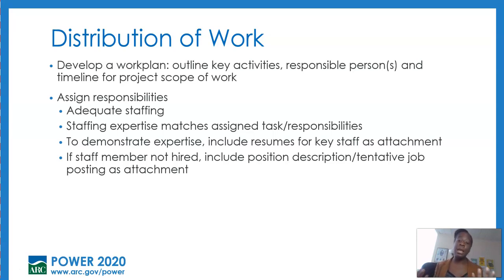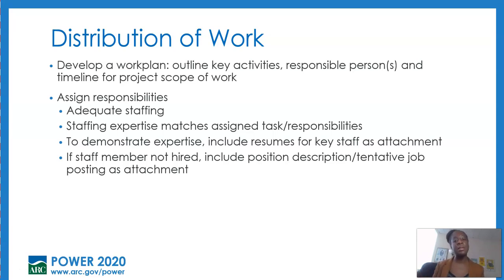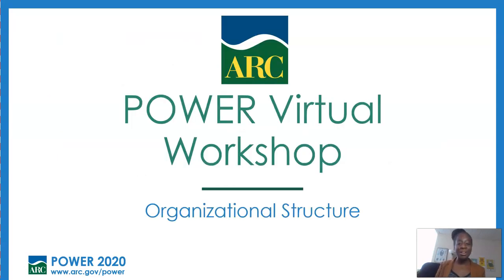If there is a position necessary to get the scope of work done but there isn't an existing staff member that has been slotted — perhaps because they need to be hired once you receive the grant award — it'll be critical that you include as an attachment a position description, or better yet a job posting description. In that way, it's very clear the type of person you're looking for: years of experience, skills, abilities, knowledge, as well as the expectation of that particular role as it relates to the Power project. Thank you so much for joining us today. That concludes this Power Virtual Workshop on Organizational Structure.